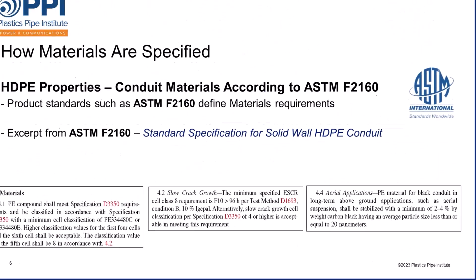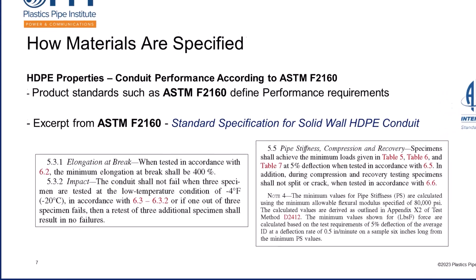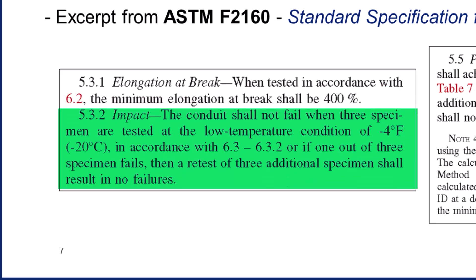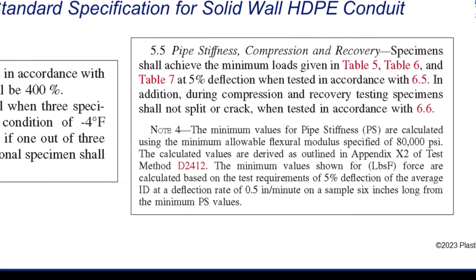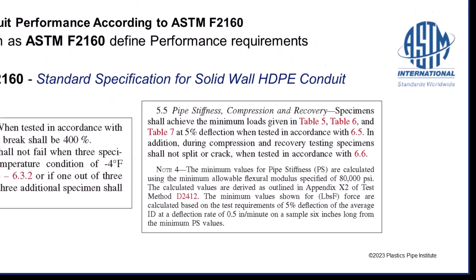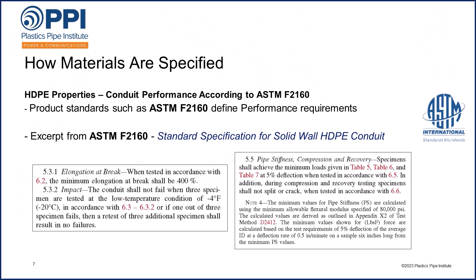There are other performance requirements also specified within ASTM F2160. For example, the elongation at break isn't just nice to have — it is a requirement as specified in section 5.3.1 that the minimum elongation at break shall be 400%. Impact characteristics are defined in section 5.3.2, which helps avoid breakage during cold weather handling. Section 5.5 defines the pipe stiffness compression and recovery requirements. These and other requirements are already specified in this product standard, imposing specific and rigorous requirements.